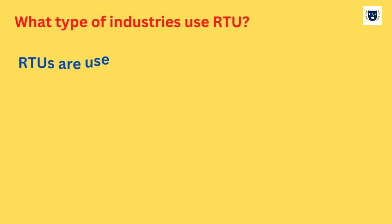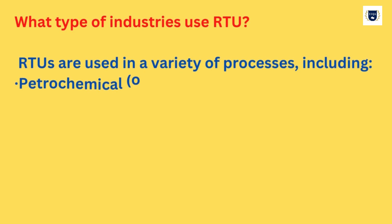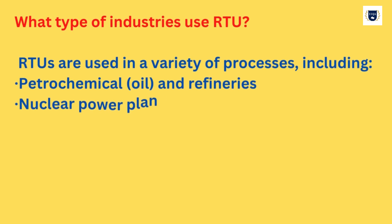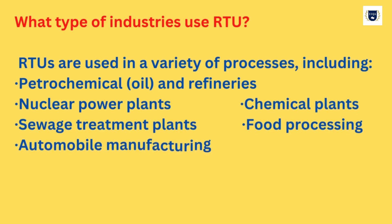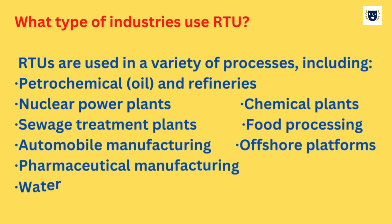What type of industries use RTU? RTUs are used in a variety of processes including petrochemical and refineries, nuclear power plants, chemical plants, sewage treatment plants, food processing, automobile manufacturing, pharmaceutical manufacturing, water treatment plants, and offshore platforms.